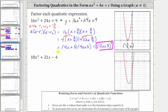Now let's look at the second expression. We need to graph y equals 18x squared plus 21x minus four, which I've already graphed here. Notice how we have two distinct horizontal intercepts, which means we have two distinct zeros. But again, it's unclear as to what these ordered pairs would be, so we'll have to determine them on the graphing calculator.